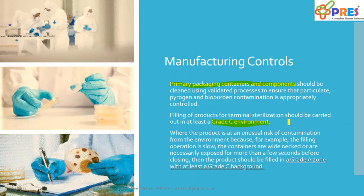Where the product is at unusual risk of contamination from the environment — for example, if the filling operation is slow, or the containers are wide-necked and necessarily exposed for more than a few seconds before closing — then the product should be filled in a Grade A zone with at least a Grade C background. Based on my experience, most industry sites are filling under a Grade A zone with at least a Grade C background.